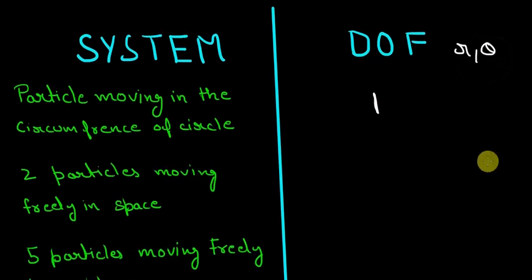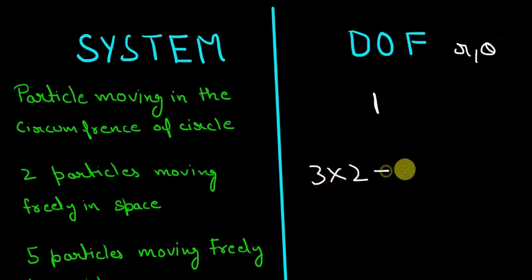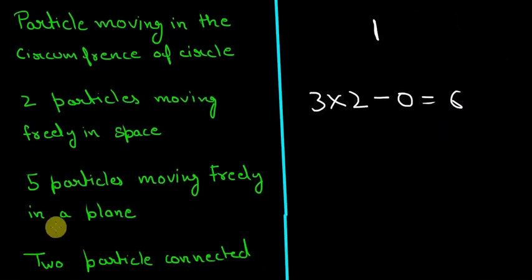Now, two particles moving freely in space: three-dimensional space into two particles minus no constraints gives six degrees of freedom.